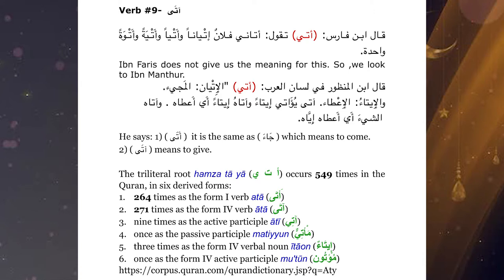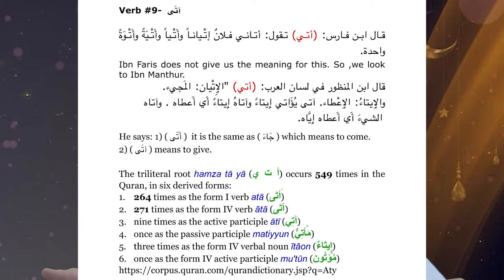We're going to look at what Ibn al-Manzoor, rahmatullahi alayhi, tells us in Lisanu al-Arab. He says: ataya — al-ityanu ya'ani al-maji'. He's telling us that these three letters — al-hamzatu walta'u walya'u — and he gives us the noun form of al-ityanu, saying that it means al-maji'. So this is basically the same as ja'a, which we took back a few verbs ago.